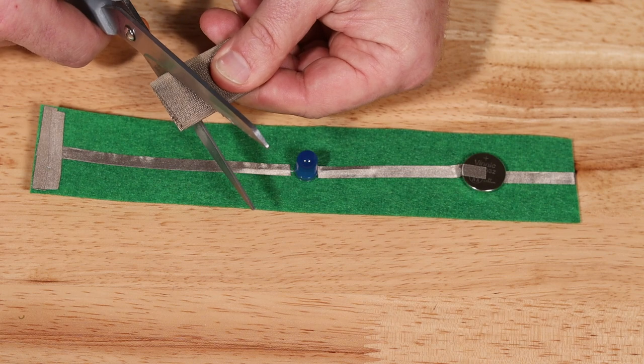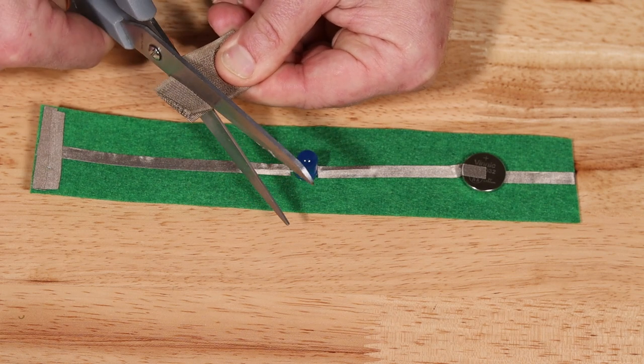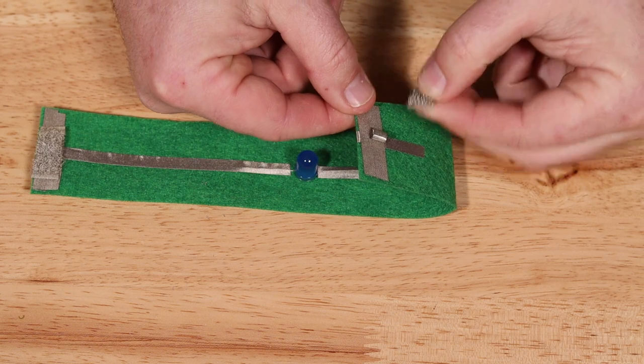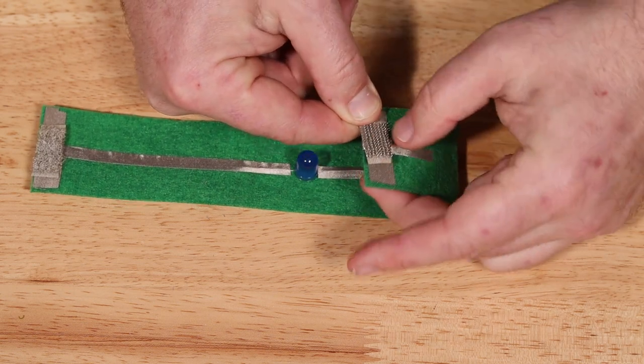Cut a small piece of the hook and loop fastener and staple half to each end of the bracelet. A loop of maker tape can hold it in place while you staple it.